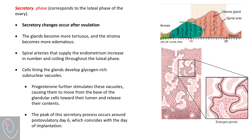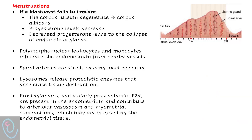During the secretory phase — corresponding to the luteal phase of the ovary — secretory changes occur after ovulation. The glands become more tortuous and the stroma more edematous. Spiral arteries increase in number and coiling throughout the luteal phase. Cells lining the glands develop glycogen-rich vacuoles. Progesterone stimulates these vacuoles to move from the basal part of the cells to the superficial part, releasing their secretion into the gland lumen. The peak of the secretory process occurs around post-ovulatory day 6, coinciding with the day of implantation, and the endometrium is now ready for implantation.